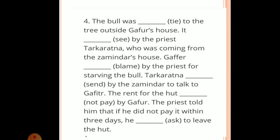Then the water was filtered before it reaches the groundwater reservoir. The last example: The bull was tied to the tree outside Gaffer's house. It was seen by the priest Tarkaratna, who was coming from the Zamindar's house. Gaffer was blamed by the priest for starving the bull. Tarkaratna was sent by the Zamindar to talk to Gaffer. The rent for the hut was not paid by Gaffer. The priest told him that if he did not pay it within three days, he was asked to leave the hut.